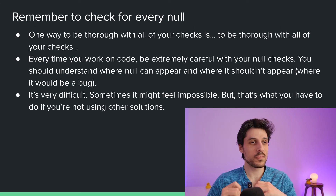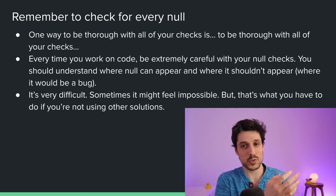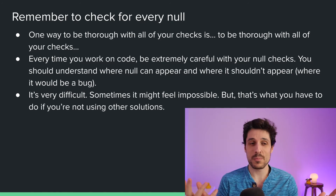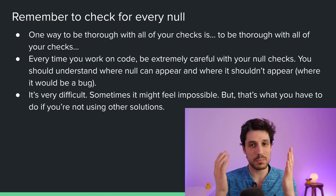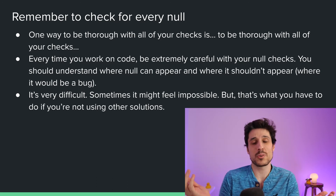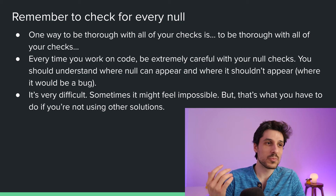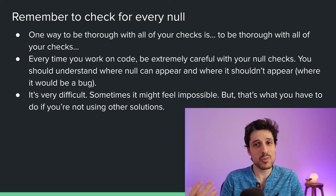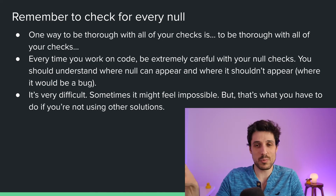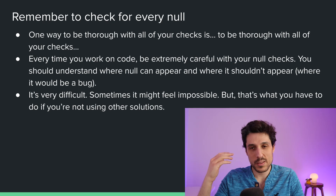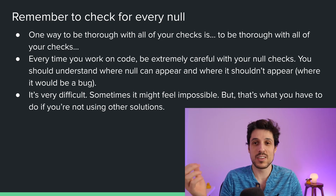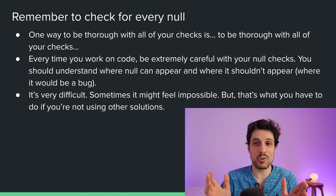Another approach — a very difficult one — is to just remember when to have your null checks. You just need to do it manually as the programmer. It's extremely difficult to remember and track things, because how are you going to know that the thing returned from a function can be null? You might not, it might be very difficult, but you might just need to track the values and make sure you handle all your null checks properly.